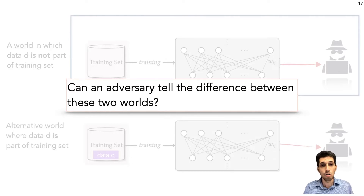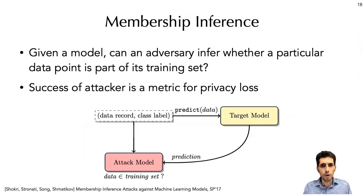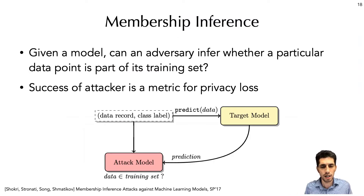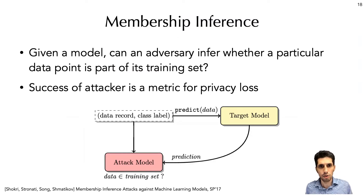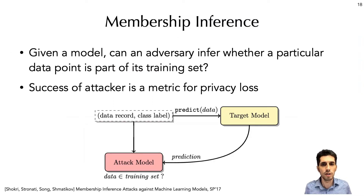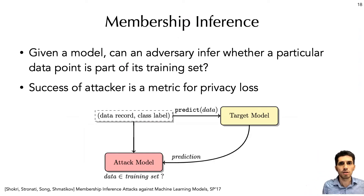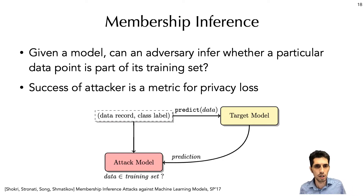And it is too risky to be deployed. We call this attack algorithm, which the adversary uses in that game, a membership inference attack. Because given a model and a data point, the adversary asks whether this data point was part of the training set. We simulate this attack and use this method to audit privacy for machine learning.